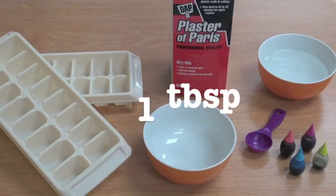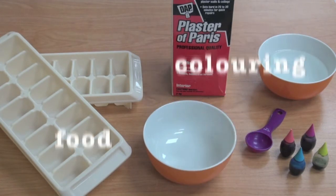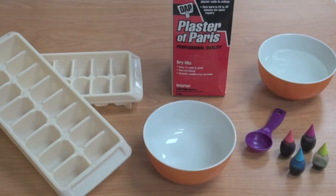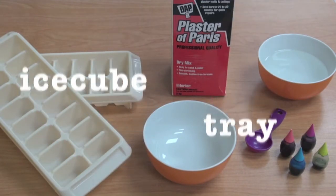For this project you will need one tablespoon, one bowl, food coloring, plaster of Paris, some water, and one ice cube tray.